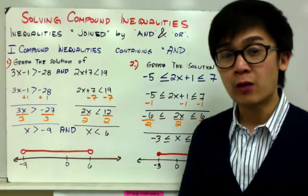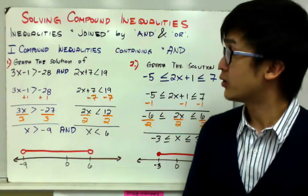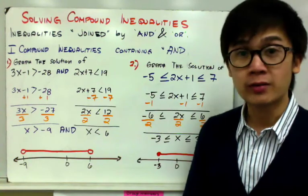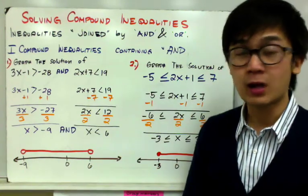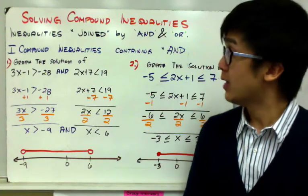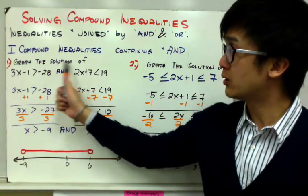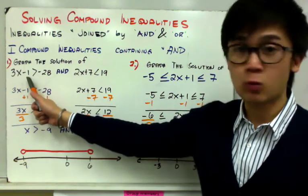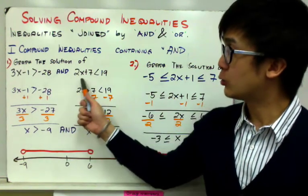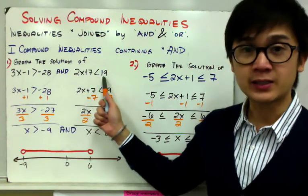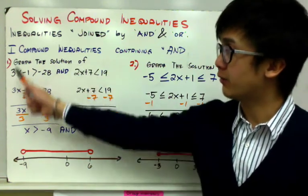We're going to be focusing on our first set, which is the AND operation. The example I'm going to show you on this board will be compound inequalities containing the AND operation. For my first set, I have to graph the solutions of 3x minus 1 greater than negative 28, and 2x plus 7 less than 19. We have two sets of inequalities here.